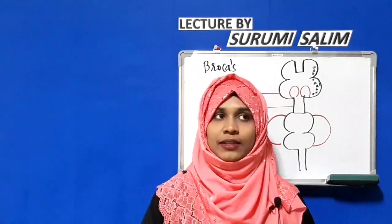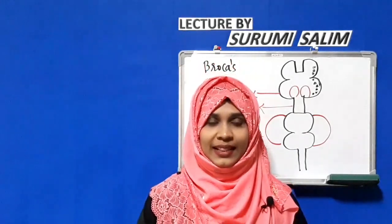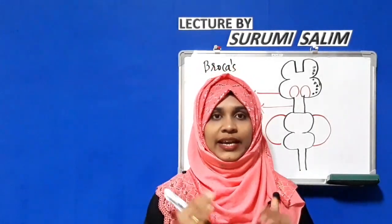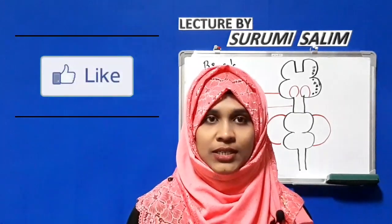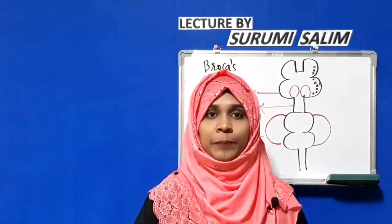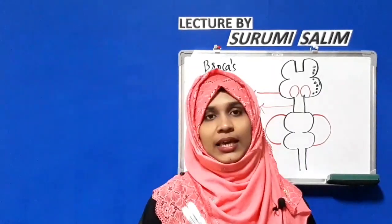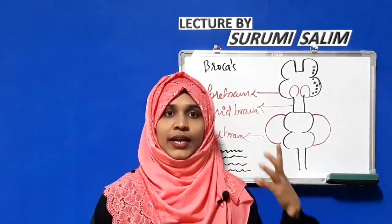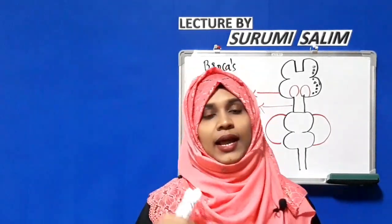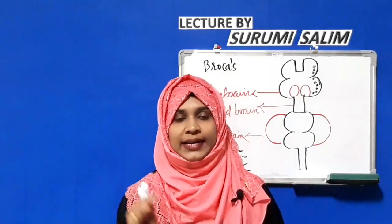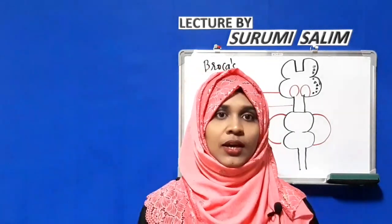The occipital lobe is the behind portion of the brain. We should be grateful for the occipital lobe because it helps in viewing images — it is the visual area of the brain, which receives impulses from the retina and helps in visual sensation. To summarize: Broca's area is in the frontal lobe, visual processing in the occipital, auditory and Wernicke's area in the temporal, and somatosensory perception in the parietal.